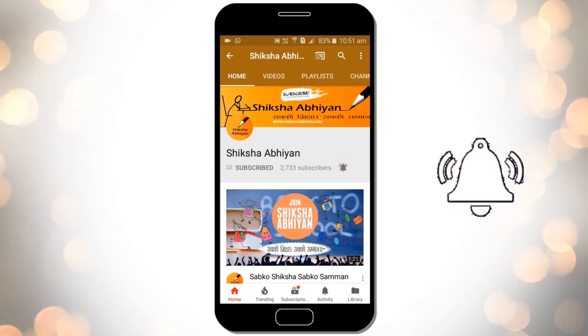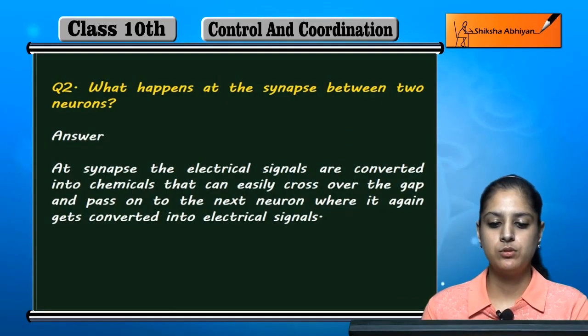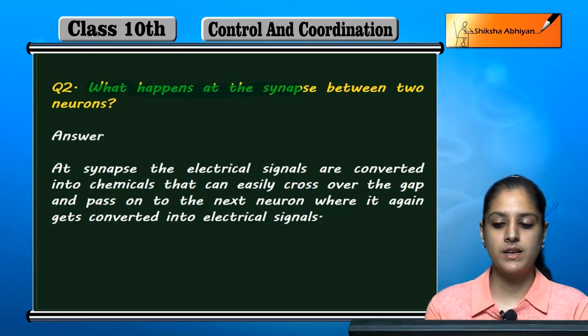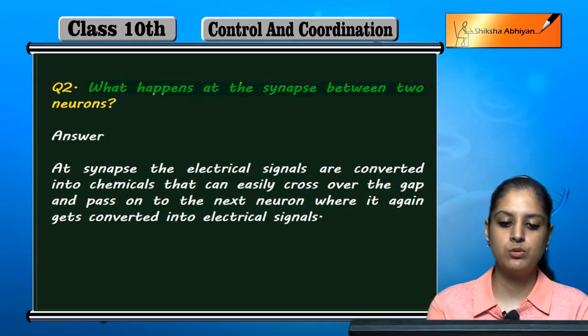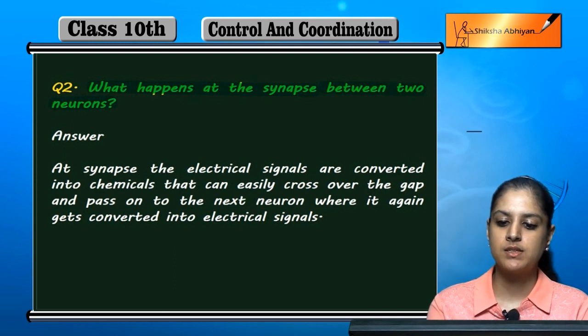Question number two: What happens at the synapse between two neurons?